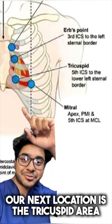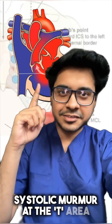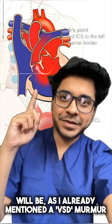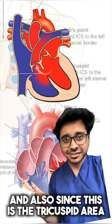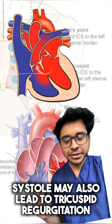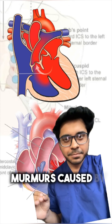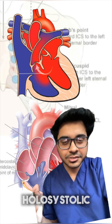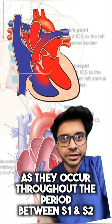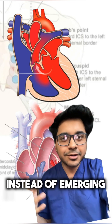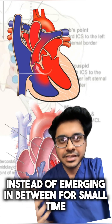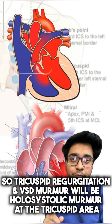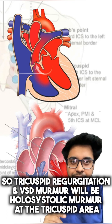The next location is the tricuspid area. A systolic murmur at the T area includes VSD and tricuspid regurgitation. Murmurs caused by regurgitation or holes like VSD are called holosystolic murmurs, as they occur throughout the period between S1 and S2. So tricuspid regurgitation and VSD murmur will be holosystolic murmurs at the tricuspid area.